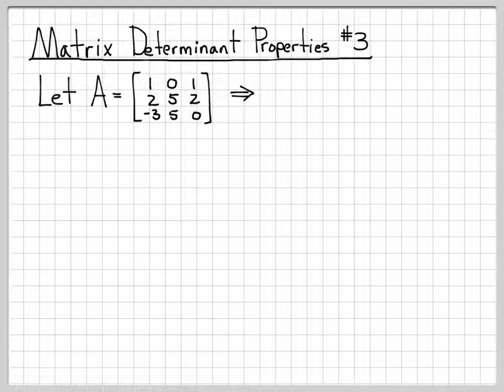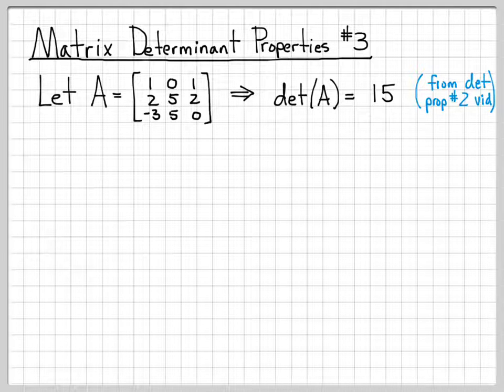Actually, we've already looked at this matrix before. In a previous video, we actually computed that the determinant of the matrix A was equal to 15. So if you go back to the video called matrix determinant properties number 2, we actually worked through the details of computing this matrix determinant.